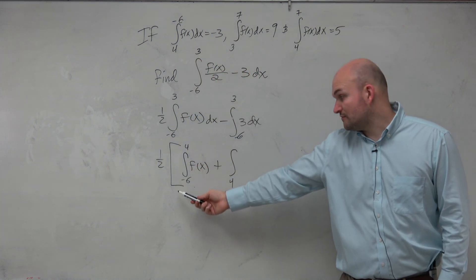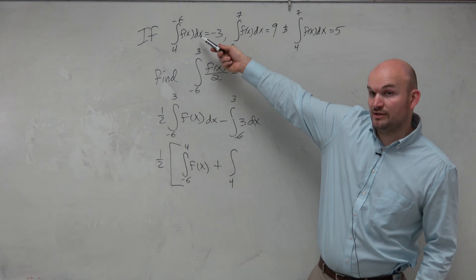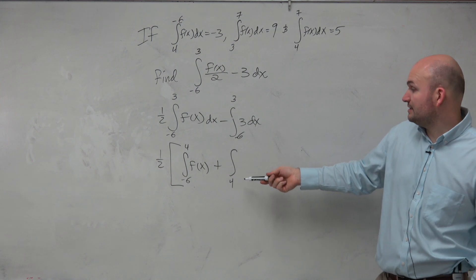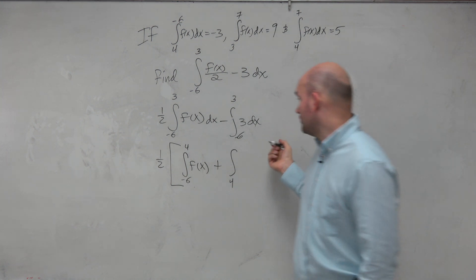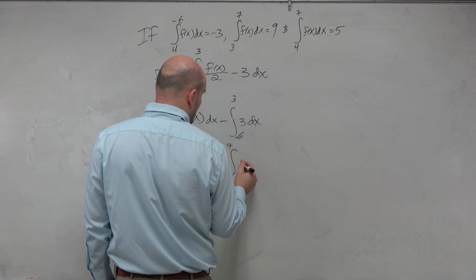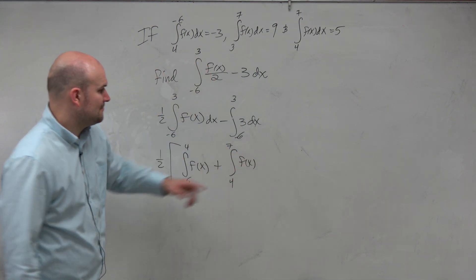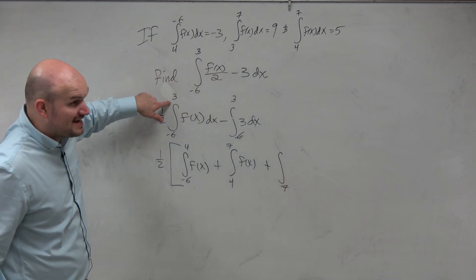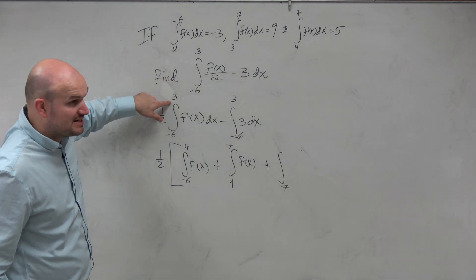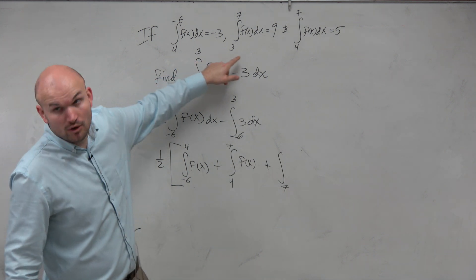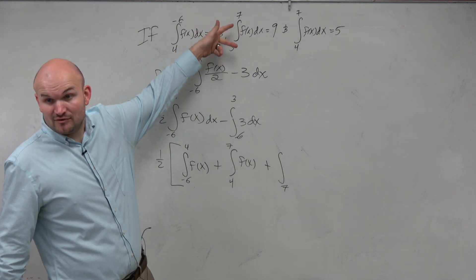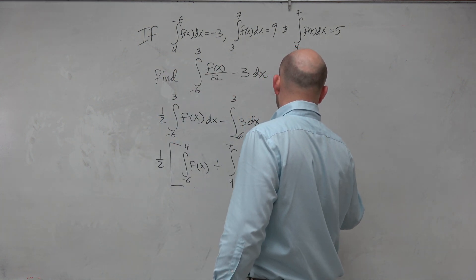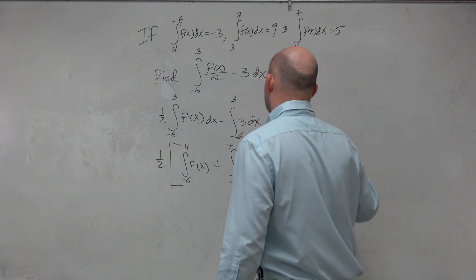Now that means I need to add this to something that's going to start with 4. If I'm going to go from negative 6 to 4, that means I need to make the connection. I need to go from 4. I can go 4 to 7. 4 to 7 of f of x. If I'm going to do that, that means this one has to start with a 7, and I have to have it end at 3.